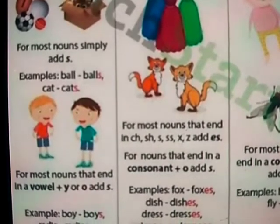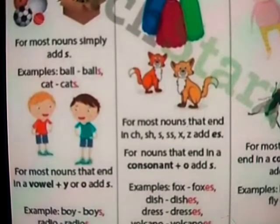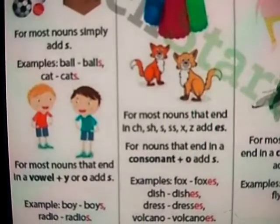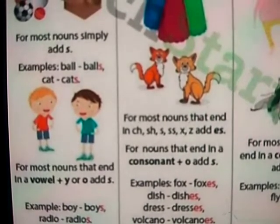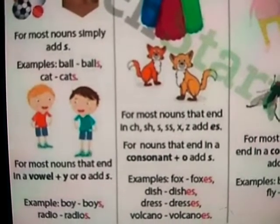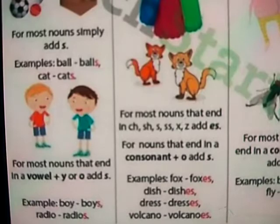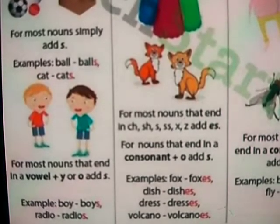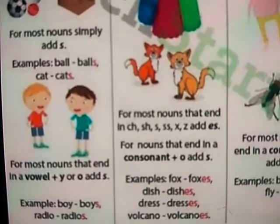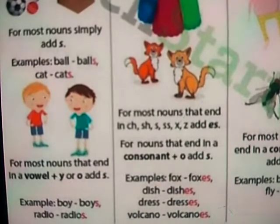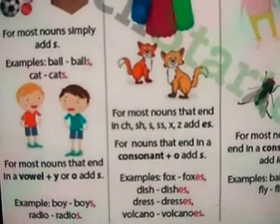For example, boy — if we add -s, it becomes boys. For most nouns that end in a vowel or -y, we add -s. For example, radio — we simply add -s, making it radios. Did you get that, students?